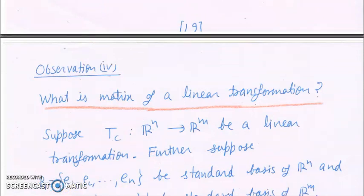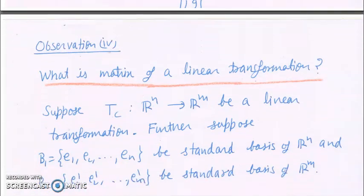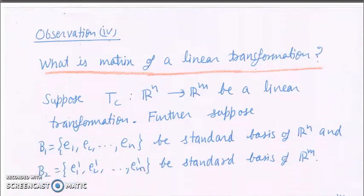Observation 4: because the Jacobian is a matrix of a linear transformation, before introducing the Jacobian let me recall what the matrix of a linear transformation is.